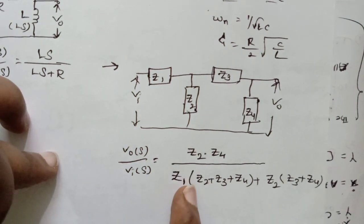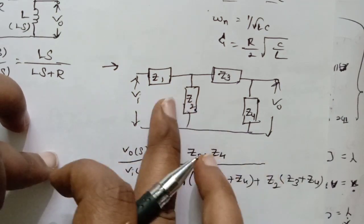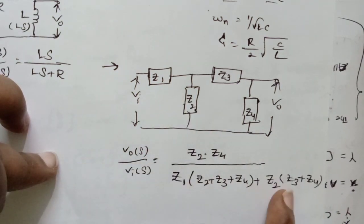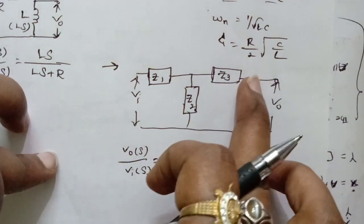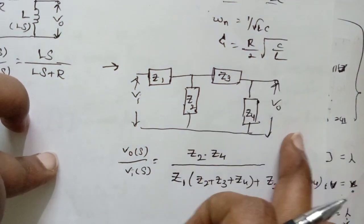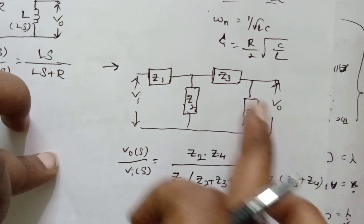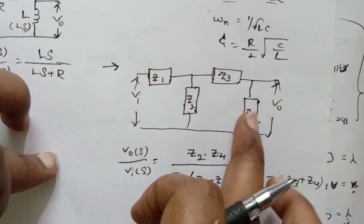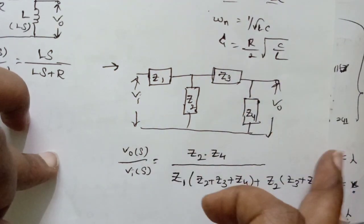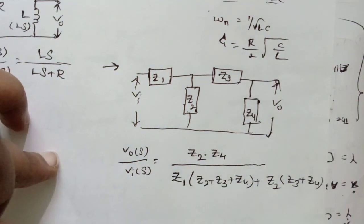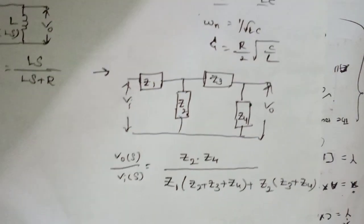I am writing only two terms because I am having only two loops. If I am having one more network here like Z5 and Z6, I will be writing Z3 times Z4 and remaining elements accordingly. You got the trick — replace Z1, Z2 etc. with any R, L, C elements and you'll get the same result.